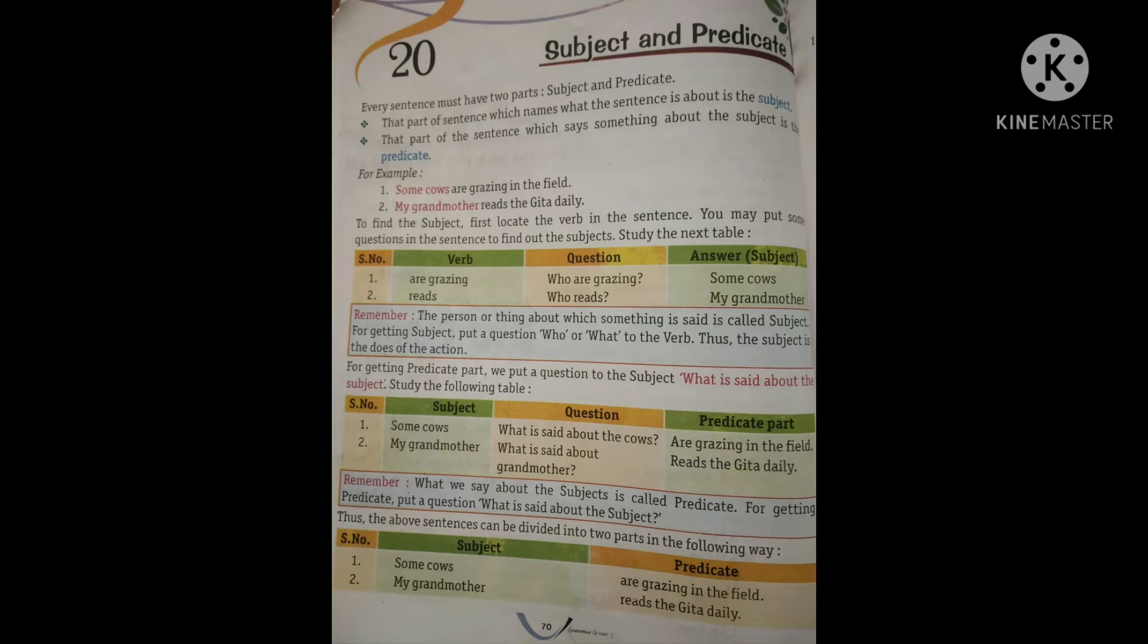Same way, reads verb hua, reads. Toh question kya banega, who is reading ya who reads? Reading kaun kar raha hai? My grandmother. Answer hoga my grandmother, toh my grandmother hua subject. In case aapko pata nahi chal raha hai ki kya subject hai, toh aap is tarike se subject pata laga sakte hai.